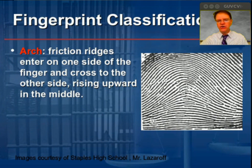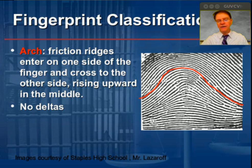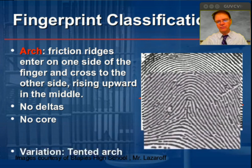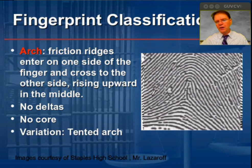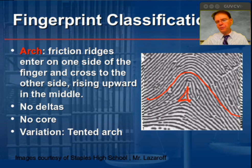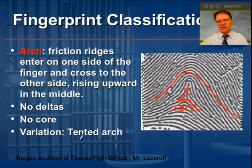Another pattern we want to look at is an arch. These ridge patterns are going to enter on one side of the fingerprint and leave on the other. They're going to rise in the middle, and there are no deltas here. Also notice there is no central region around which ridge patterns evolve. The tented arch pattern has the same base as a plain arch, yet we have a triangular pattern right in the middle of the print. Because it's in the core of the print, we refer to this as a tented arch — it looks like a little boy scout tent.